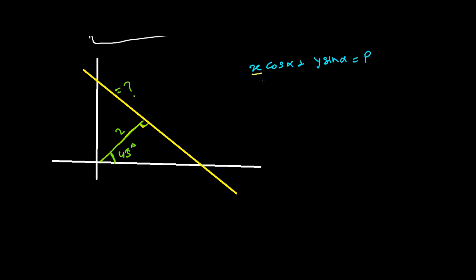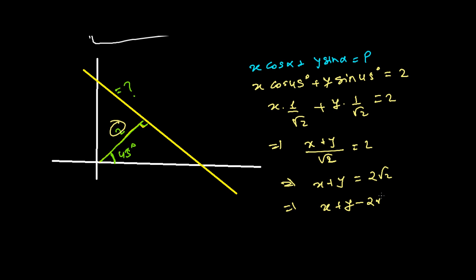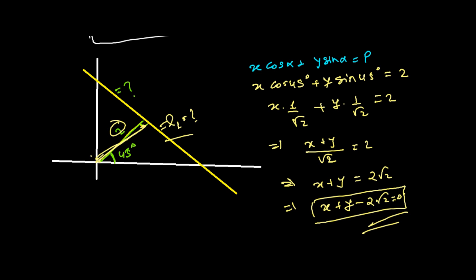Here alpha = 45°, so cos 45° = 1/√2 and sin 45° = 1/√2, and P = 2. Substituting: x · (1/√2) + y · (1/√2) = 2, which gives (x + y) / √2 = 2, so x + y = 2√2. Therefore the required equation of the line is x + y − 2√2 = 0. This is the equation of the line whose perpendicular from the origin has length 2 units and makes an angle of 45 degrees.